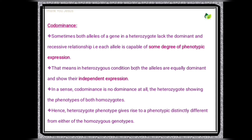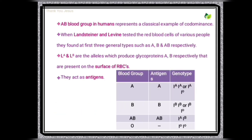The heterozygote expresses both alleles equally. The heterozygote phenotype is distinctly different from either of the homozygous genotypes. The joint expression of both alleles of a gene in a heterozygote is called codominance.